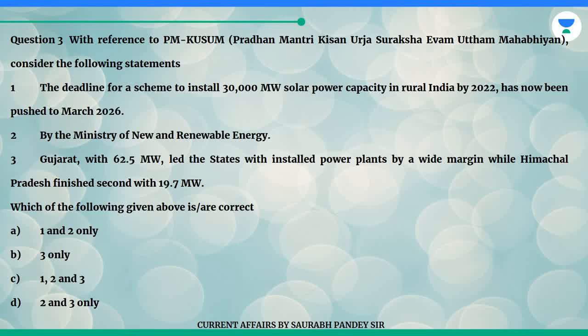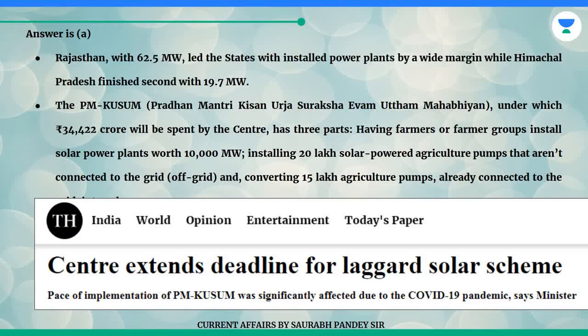Which of the following given above is correct? Answer is A. Rajasthan, with 62.5 MW, led the states with installed power plants by a wide margin, while Himachal Pradesh finished second with 19.7 MW. The PM Kusum scheme, under which 34,422 crore rupees will be spent by the centre, has three parts: having farmers or farmer groups install solar power plants worth 10,000 MW; installing 20 lakh solar-powered agriculture pumps that aren't connected to the grid (off-grid); and converting 15 lakh agriculture pumps already connected to the grid into solar.